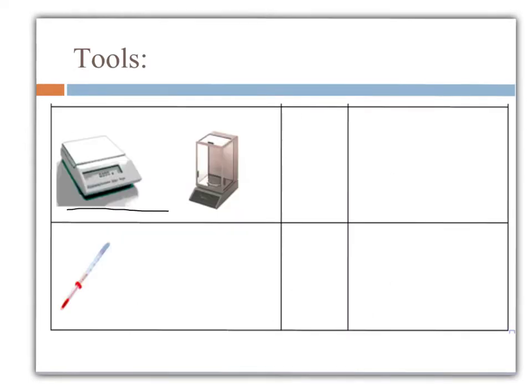Next, we have balances, which measure mass, the amount of matter in an object. Mass can be measured using multiple units, including grams, kilograms, that's kg, and milligrams mg.